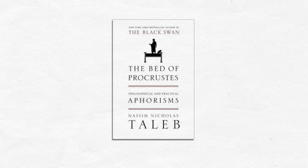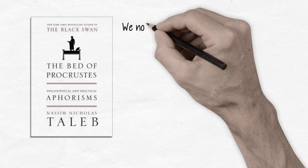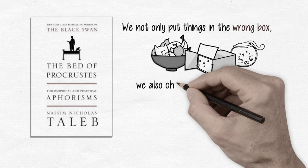The Bed of Procrustes is a book full of aphorisms, most ranging from a sentence to a paragraph in size, with a thoughtful and potent message that revolves around this idea, the idea that, I'm paraphrasing, we not only put things in the wrong box, we also change the wrong variable.